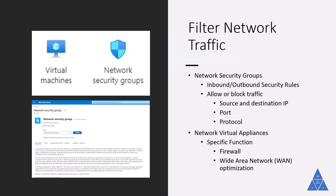Azure Virtual Networks enable you to filter traffic between subnets using the following approaches. Network security groups are Azure resources that contain multiple inbound and outbound security rules. You can define rules to allow or block traffic based on factors such as source and destination IP address, port, and protocol. Network virtual appliances are specialized virtual machines that perform a particular network function, such as running a firewall or performing wide area network optimization.